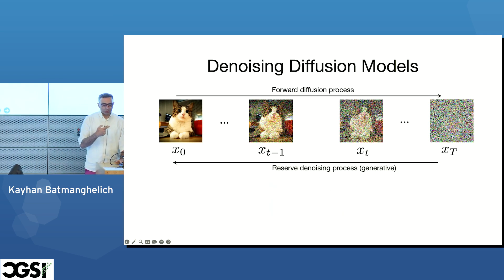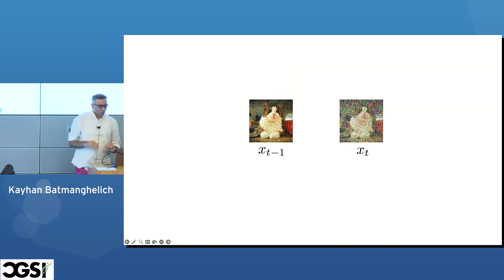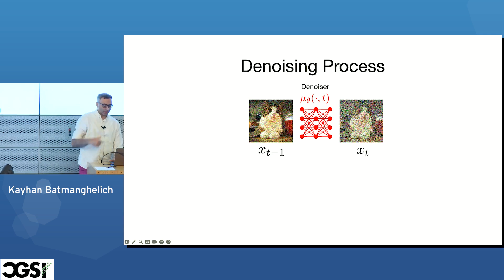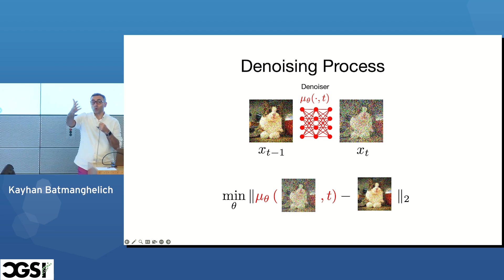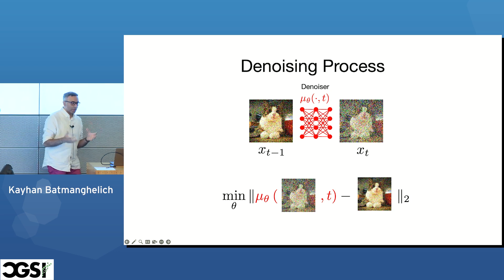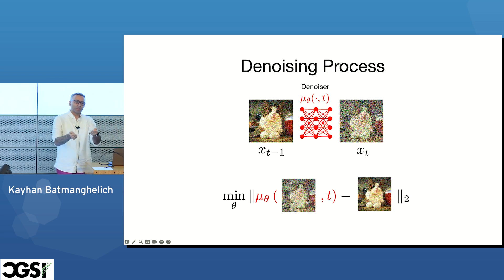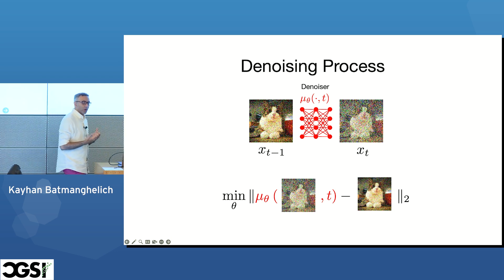What is learnable is the reverse procedure. In the reverse procedure, you're given the image from a previous noisier step and you want to denoise it. A neural network inputs xₜ, the noisier version, and tries to denoise it by one step. It's viewed as a simple regression problem: you pass the noisy image through a neural network parametrized by theta, and do pixel-wise prediction of the less noisy result. Since you were the one who added the noise, you have the ground truth — this drives the denoising process.